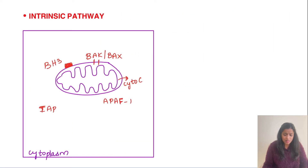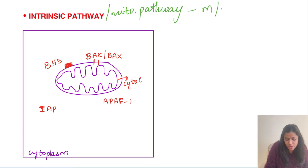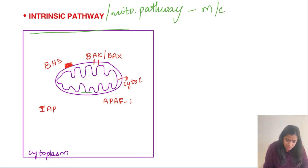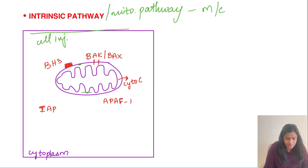Moving on to the intrinsic pathway, it is also called the mitochondrial pathway because it occurs in the mitochondria. It is the most common and the most important pathway. Here we are looking at the cell again, with the mitochondria and its cristae.